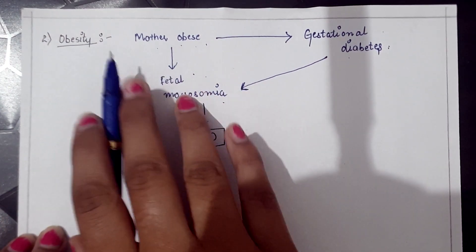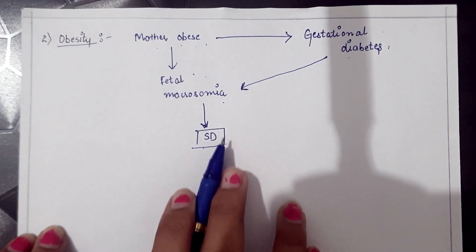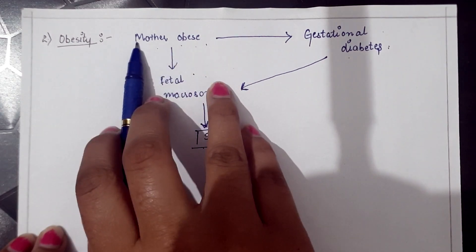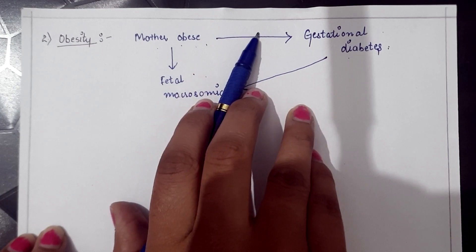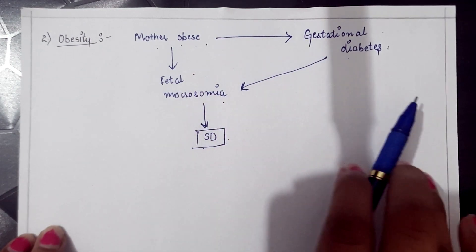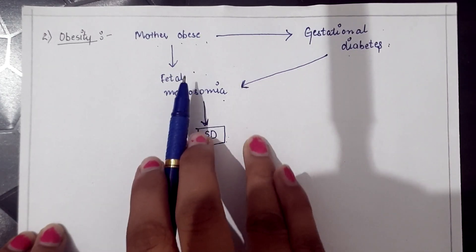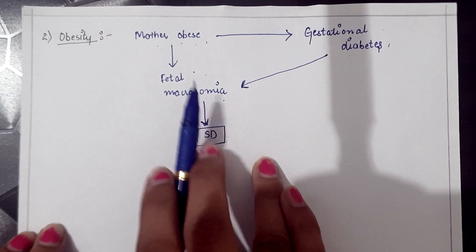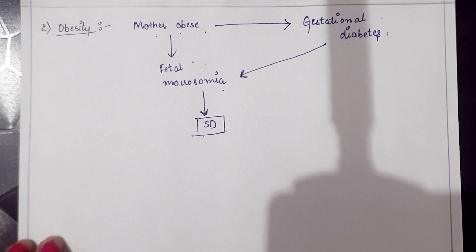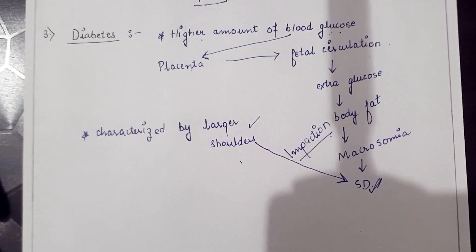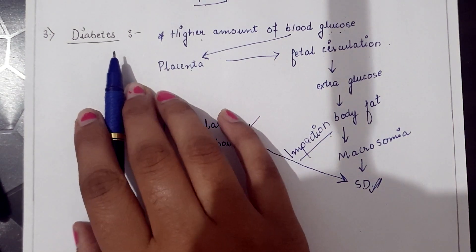Obesity: if the mother is obese, there are chances of fetal macrosomia, which can cause shoulder dystocia. Additionally, obese mothers have chances of developing gestational diabetes, which also causes fetal macrosomia. The next factor is diabetes or gestational diabetes, and how it causes shoulder dystocia.